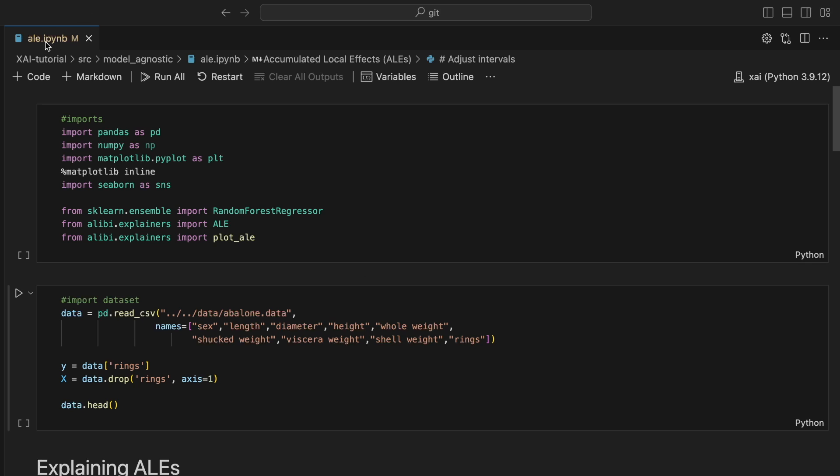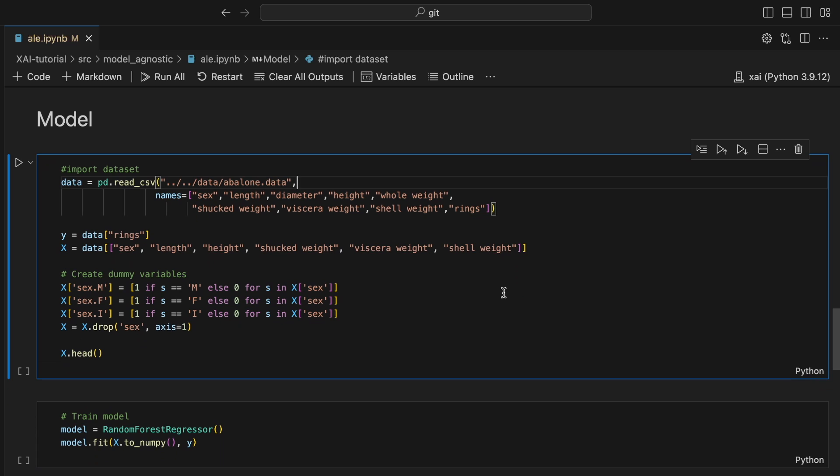We're working in the ALE notebook in the model agnostic folder. As mentioned, we'll be applying ALEs using the Alebi package. It provides a bunch of XAI methods. For now, we are interested in the ALE and plot ALE function. We are applying the method to the Abalone dataset mentioned at the start. So we load our dataset and select the target variable. We also do some feature engineering.